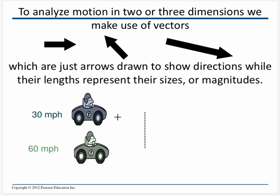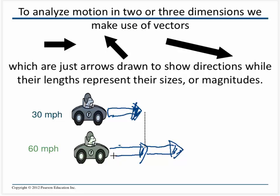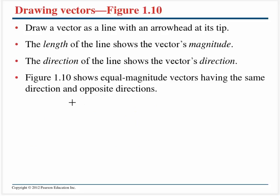To make use of vectors, what we typically do is draw arrows, where the size represents the magnitude and the direction represents the direction. Here I've got this little guy cruising along at 30 miles per hour from left to right. Another guy might be going 60 miles per hour, so I would draw his vector to be roughly twice as long. When we draw a vector, we draw an arrow: the length represents the vector's magnitude, and the direction represents the direction of the vector.